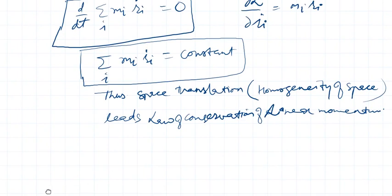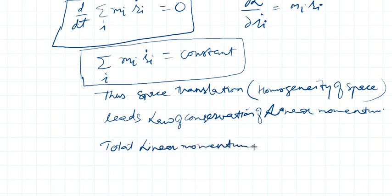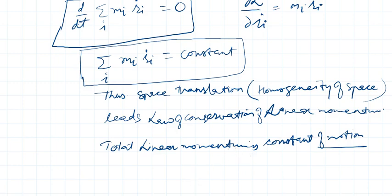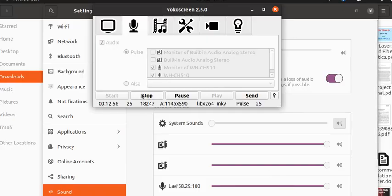In other words, I can say that total linear momentum — not angular momentum, but total linear momentum — is a constant of motion. That is the ultimate goal achieved in this lecture. In the next lecture, I will talk about how homogeneity of time leads to the law of conservation of energy, which is also a very important topic.